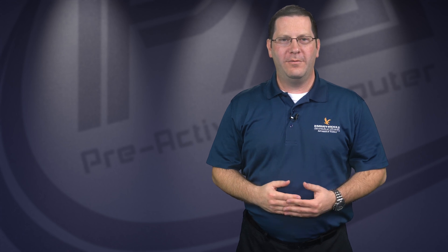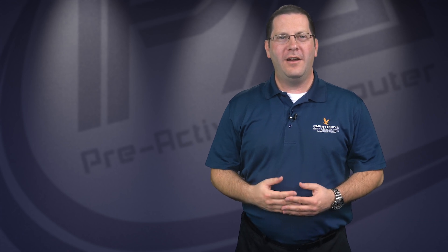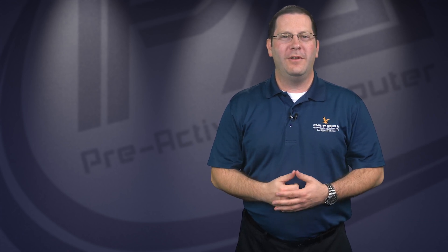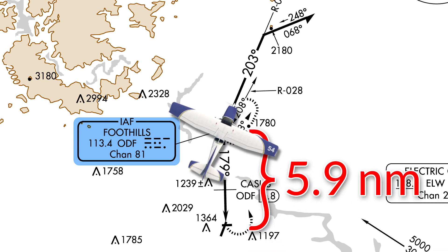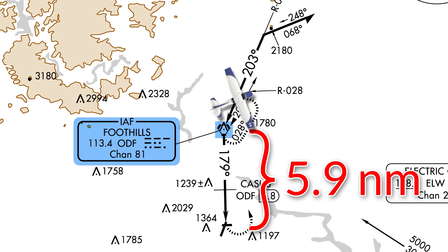Let's look at a non-terminal approach with the VOR located off the field. For this example, we use the VOR 21 approach into Toccoa, Georgia. Ensure the frequency 113.4 is entered into the active nav box. Verify it with the identifier listed as ODF. The initial approach fix is the Foothills VOR. But remember, the VOR is not on the field — it's about 6 nautical miles from the airport. Because of that, we shouldn't need to travel as far out on the radial.